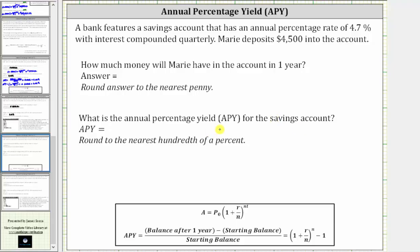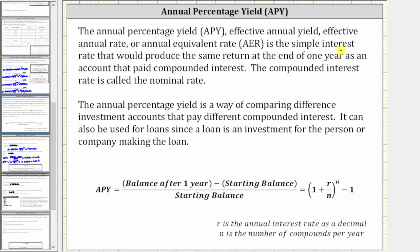Remember, the annual percentage yield is the simple interest rate that would produce the same return at the end of one year as an account that paid compounded interest.